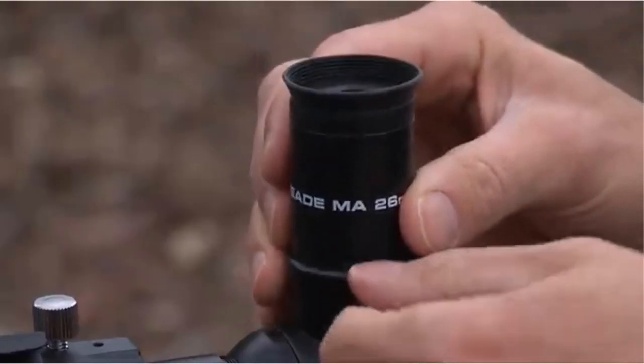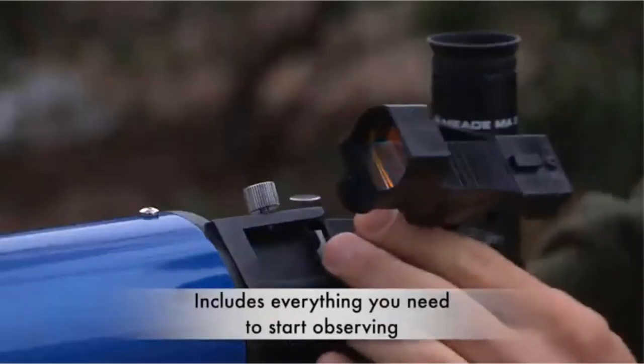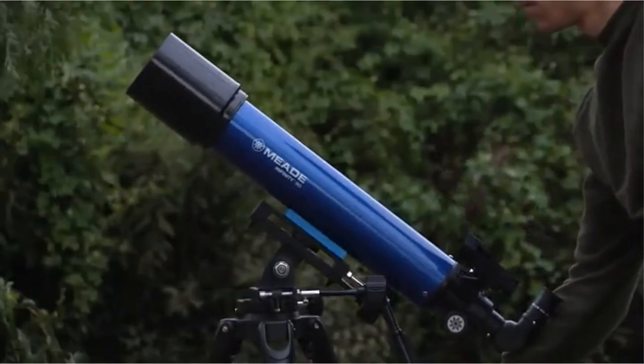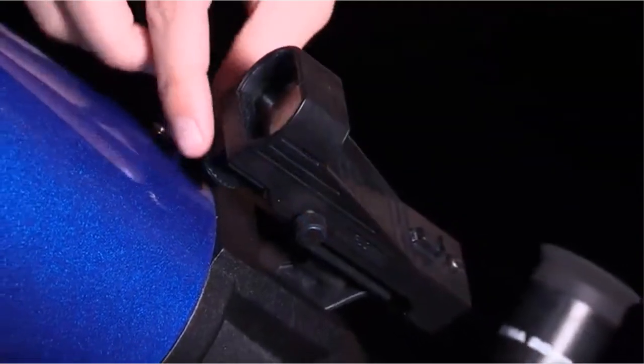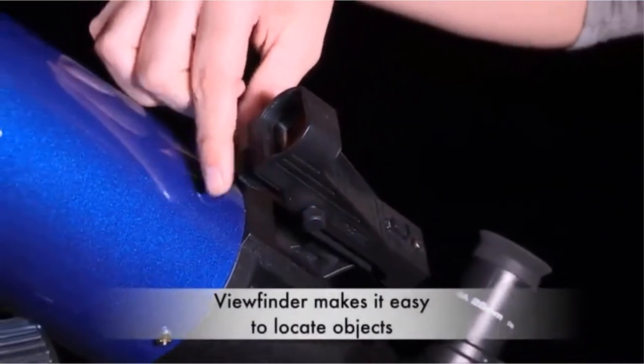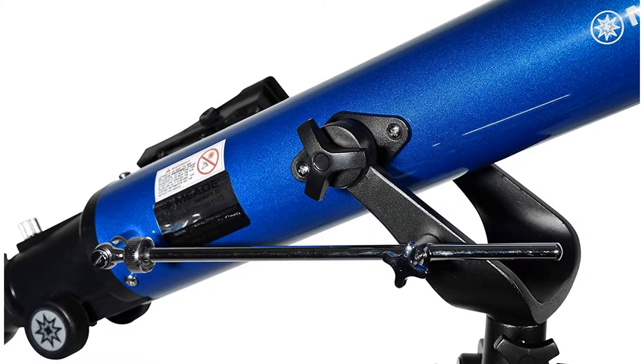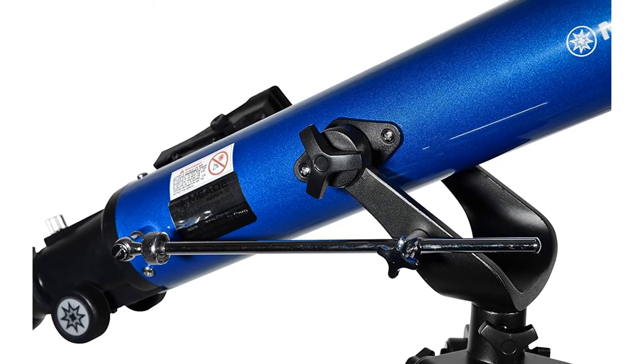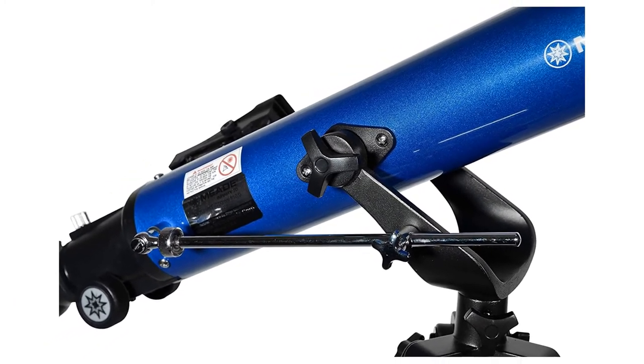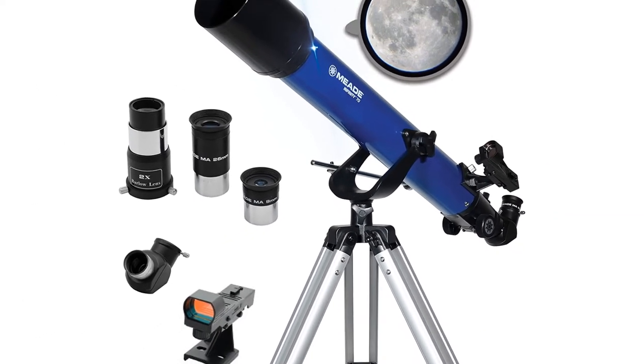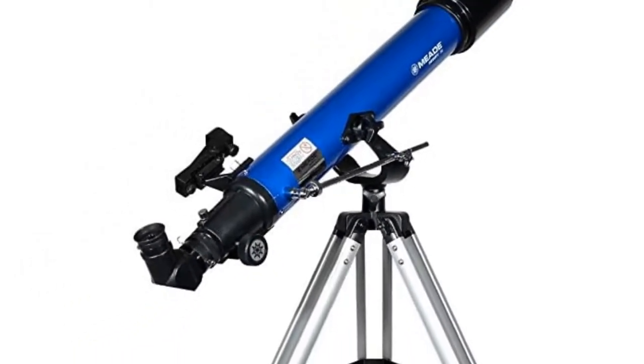The telescope has an Altazimuth mount with a slow-motion control rod that lets you track celestial objects. The telescope features two eyepieces offering low and high power magnification that lets you view a wide range of objects. The telescope comes with the Altazimuth Suite astronomy planetarium DVD and astronomical software. Altazimuth mount with a slow-motion control rod for precision tracking means you can easily track objects day or night.